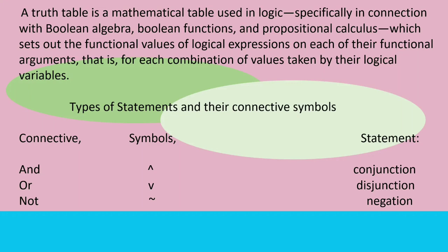Types of statements and their connective symbols: The first symbol is conjunction, and the connective to use is 'and.' The second symbol is disjunction, and the connective is 'or.' The last symbol is negation, and the connective is 'not.'